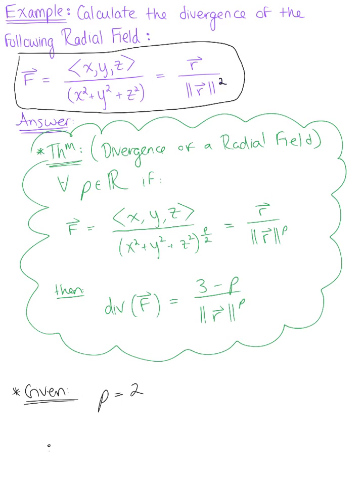So plugging this in, therefore, the divergence of the vector field is equal to 3 minus 2 all over the magnitude of vector R squared, leaving us with a beautiful final answer, 1 over the magnitude of vector R squared. And that is it. This is the divergence of our radial field.